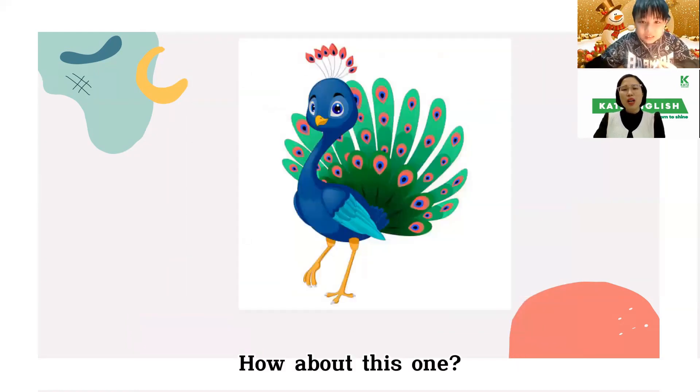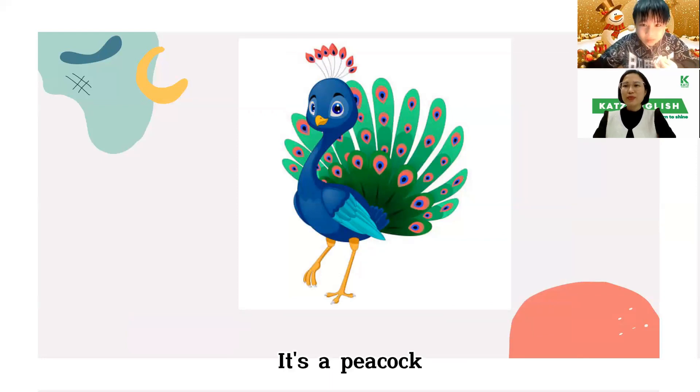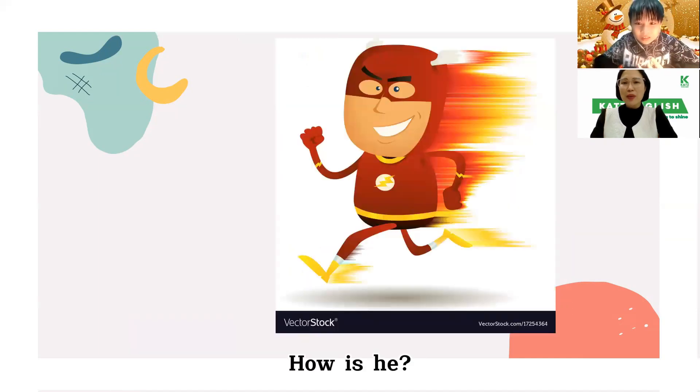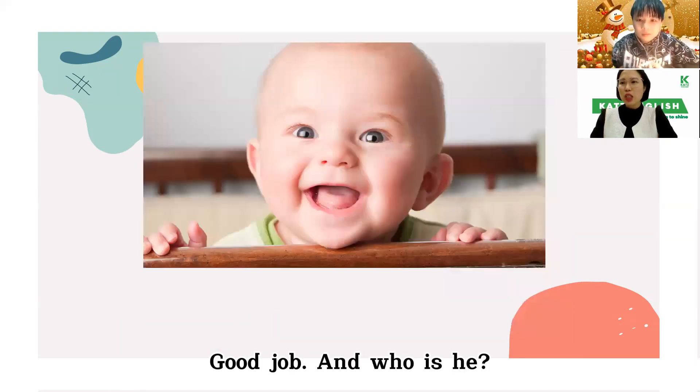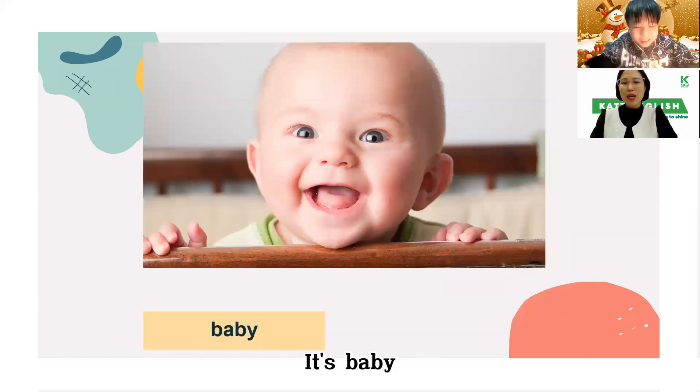And how about this one? What animal is this? It's a peacock. Good job. Peacock. And how is he? Fast. Okay, he's very fast. Good job. And who is he? Baby. Okay, he's baby.